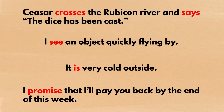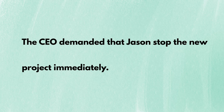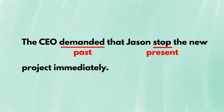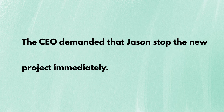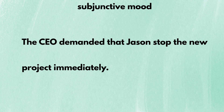Let's move on to the last chapter: the subjunctive mood. Sometimes you see the simple present tense used in a seemingly weird way, as in 'the CEO demanded that Jason stop the new project immediately.' The tense is mixed — past tense here, present there — and the verb agreement seems off: the subject is Jason, but the verb 'stop' doesn't have an -s. Well, there's nothing wrong with this sentence, because it's not using the simple present tense. Instead, it is using the subjunctive mood.